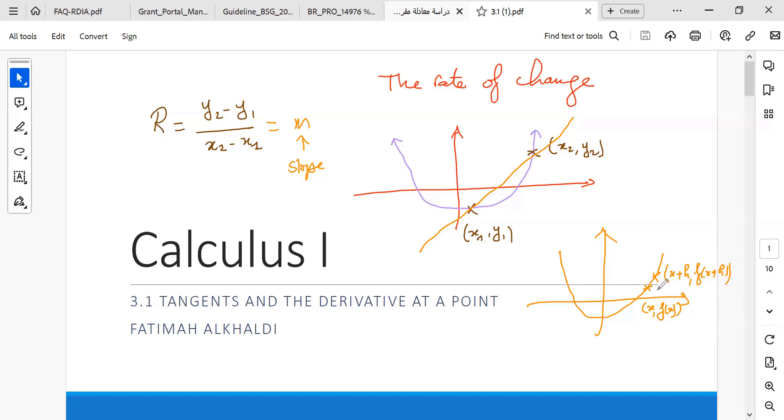So H might be 1, then 0.1, then 0.01, and so on. As H approaches 0, what happens? The points get closer to X.